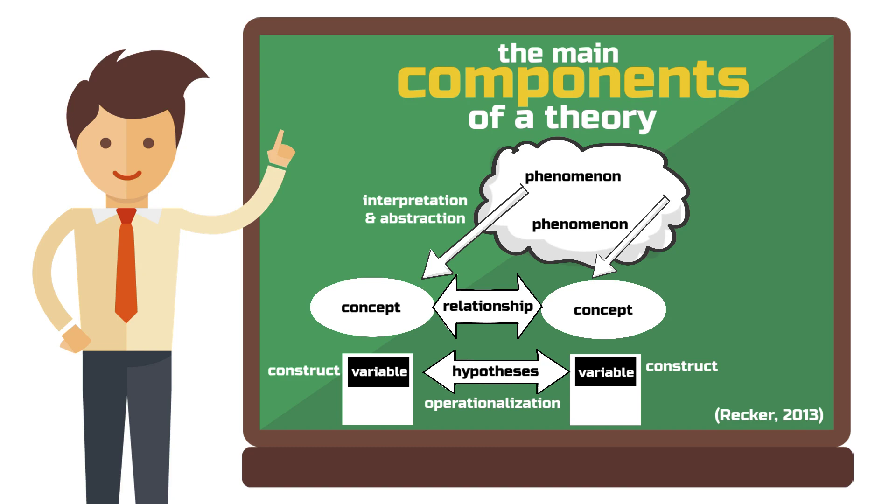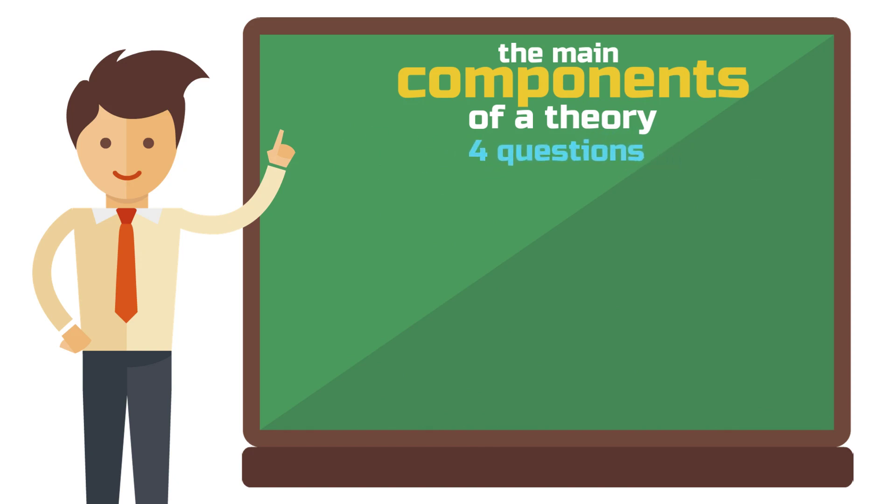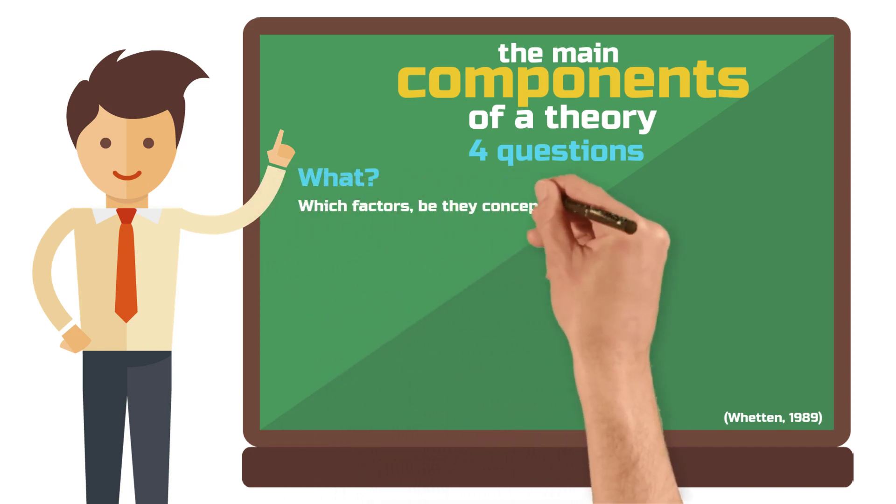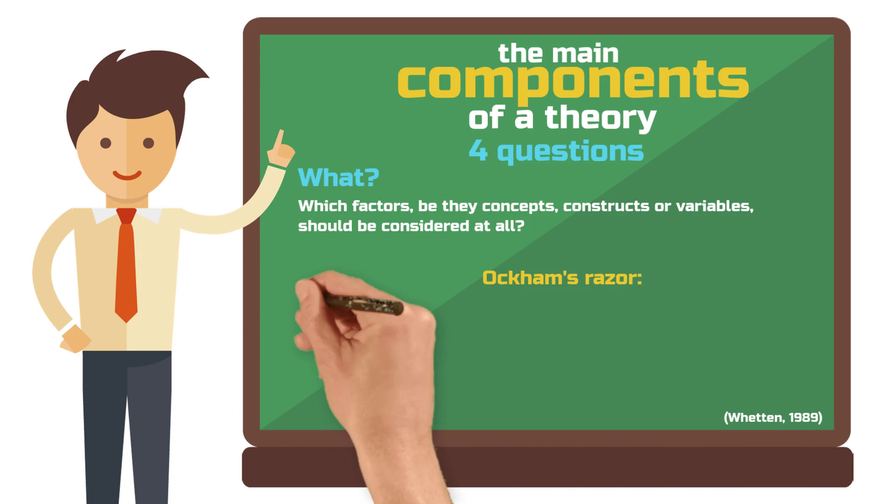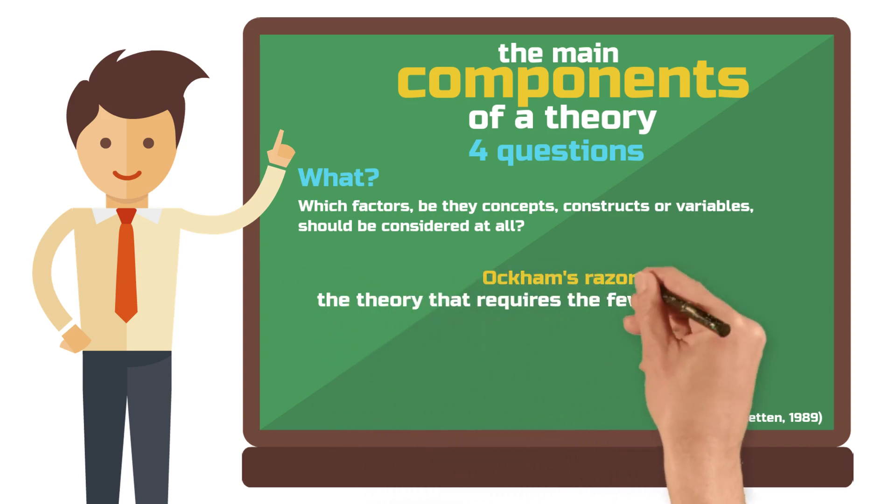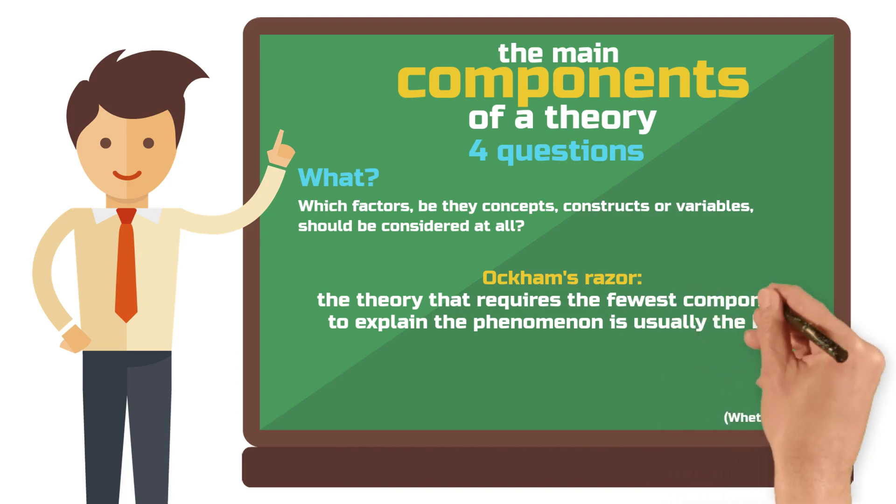To bring some more order into all these components of theory, you can ask questions such as Wetten did. First, what? Which factors, be they concepts, constructs or variables, should be considered at all? Here the principle of parsimony or Occam's razor applies, namely, the theory that requires the fewest components to explain the phenomenon is usually the best.